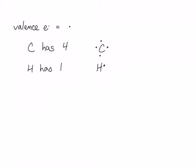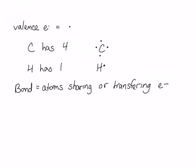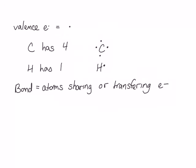This is useful when we look at bonding. A bond occurs when atoms transfer or share electrons. When forming bonds, atoms will try to follow what's called the octet rule. The octet rule states that atoms will try to attain a filled electron valence shell. It's called the octet rule because the row 2 elements, which include carbon, will try to attain a complete valence shell of 8 electrons — an octet. This includes carbon, oxygen, and nitrogen.